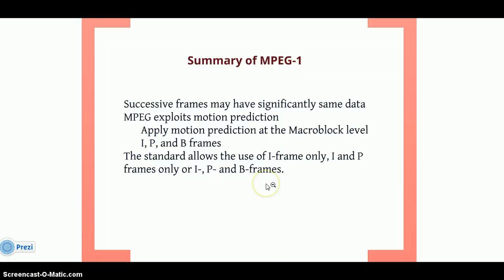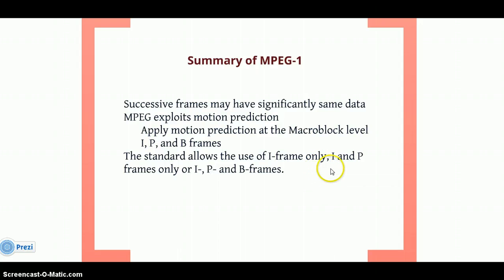This is the brief introduction of MPEG 1 that I described here. It is having three frame types: I-frame, P-frame, and B-frame. MPEG exploits motion prediction as I told you. These are the standards followed — I-frame only, or I-frame and P-frame only, or I-frame, P-frame, and B-frame together.